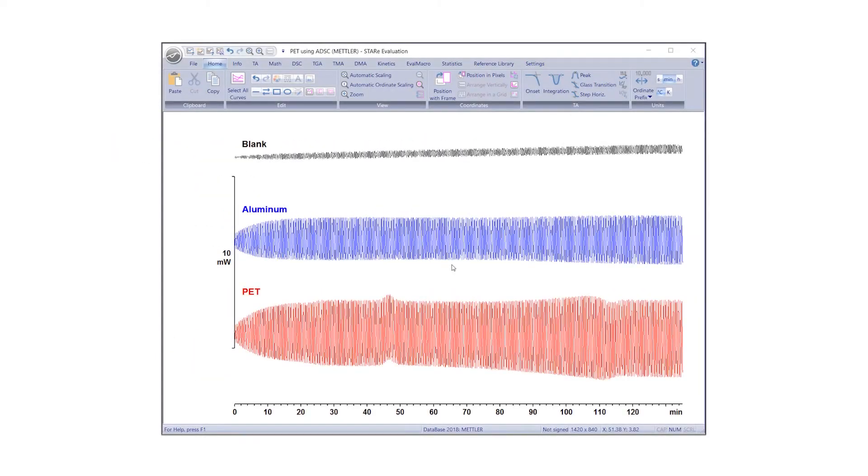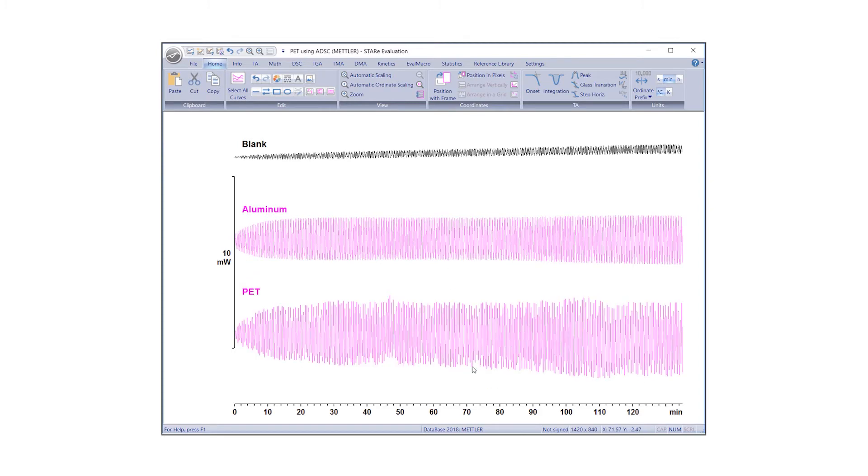Beginning with Step 1, perform the blank, reference and sample DSC measurements using the same method. Step 2, to compensate for drift, you will need to subtract the blank curve from the aluminum and PET curves. Hold down the Control key and left-click to select the aluminum curve, PET sample curve, and blank curve.